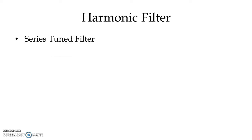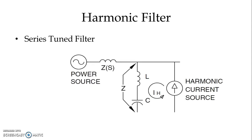First we have the series tuned filter. As shown in the figure, we have a power source and the impedance of the power source. We have a harmonic current source due to a non-linear load, and we have L and C — that is the series tuned filter — which is connected across the harmonic current source.